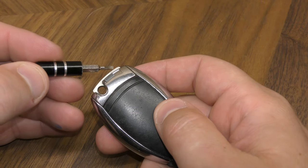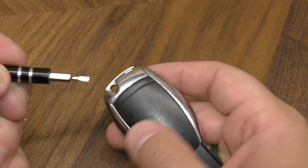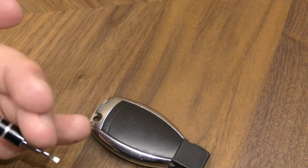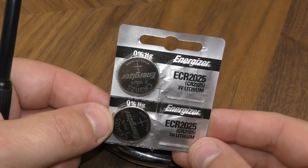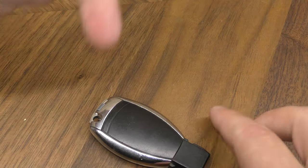So what you want to do first is remove this mechanical key. You're going to need a small screwdriver like this, and you'll also need two of these 2025 batteries. You can get these off Amazon. They're very inexpensive.